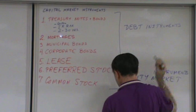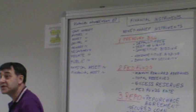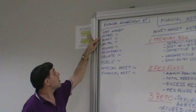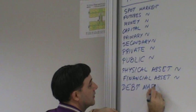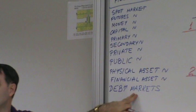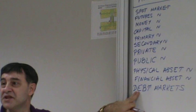Let's go back to financial markets. Remember, we had a spot market, futures market, money market, capital, primary, secondary. Private, public, physical, financial. We also have debt markets. The definition is a financial market where debt instruments are traded. We also like to say where fixed income instruments are traded. Both are good.